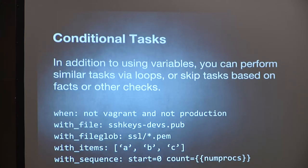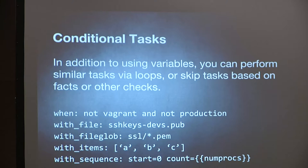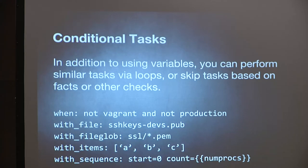There are generic modules like a command-line module — 'run this command, give me the results' — and specific ones like the EC2 module that says 'launch this instance, connect these EBS volumes, give me the IP addresses of launched systems.' There are also control variables you can add to tasks: perform similar tasks via loops, or skip tasks based on facts or other variable checks.